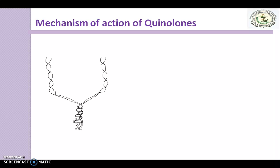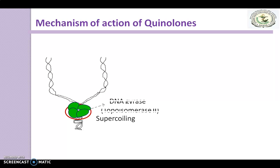During DNA replication, the replication fork moves forward and a positive superhelical twist begins to accumulate in the DNA. In order for replication to continue, this supercoiling must be removed, because the increased tensional stress would otherwise prevent further replication from completing. The bacterial enzyme DNA gyrase, also known as topoisomerase 2, is responsible for removing this positive superhelical twist or torsional stress.